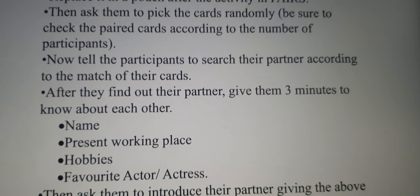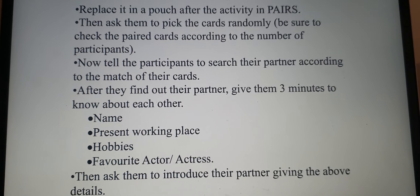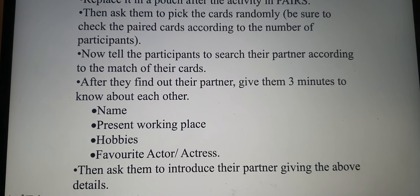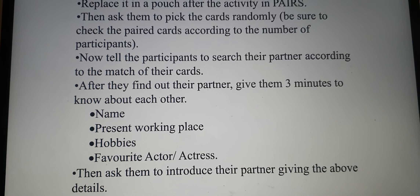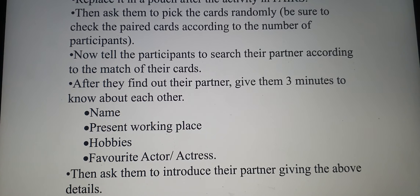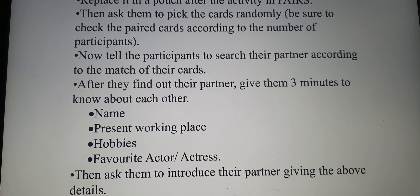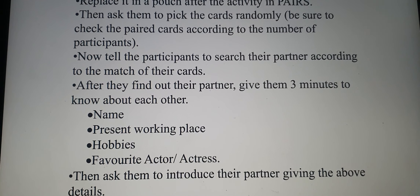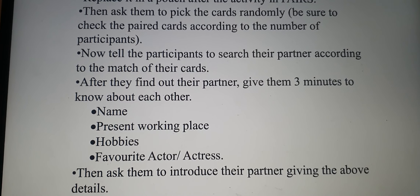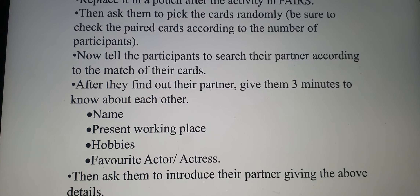When the cards are distributed in pairs, we will shuffle them randomly and then call pairs by name. When they are searching for pairs, they will ask their partner. They will search for their partner using antonym pairs like day-night, happy-sad, hero-heroine, and then they will be paired.